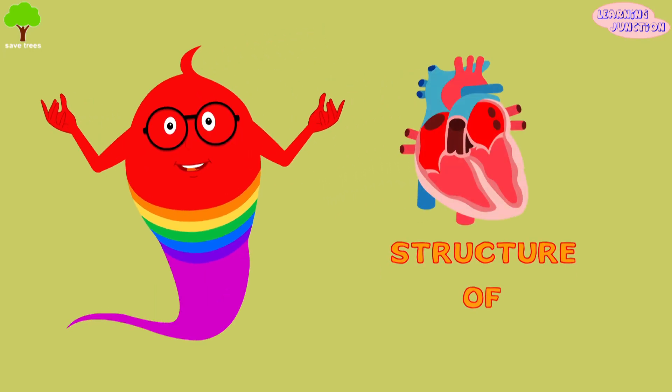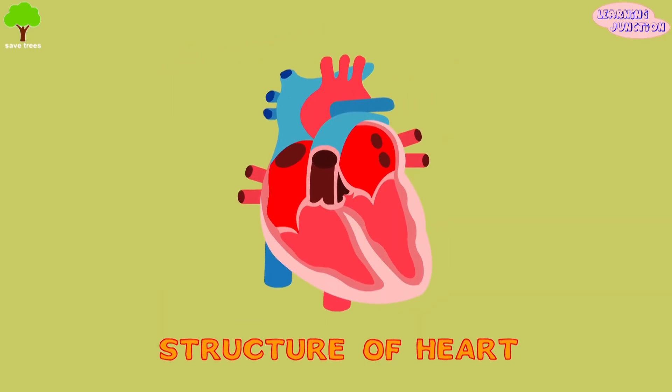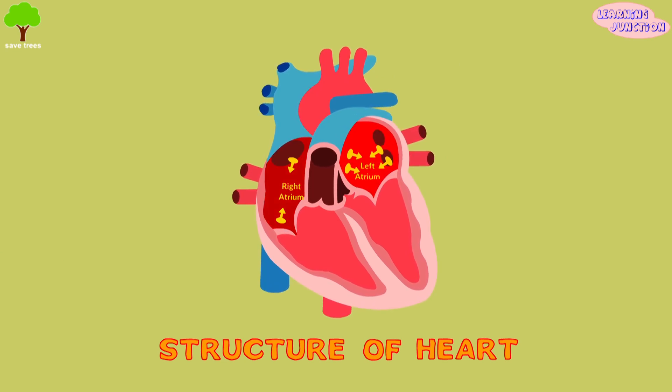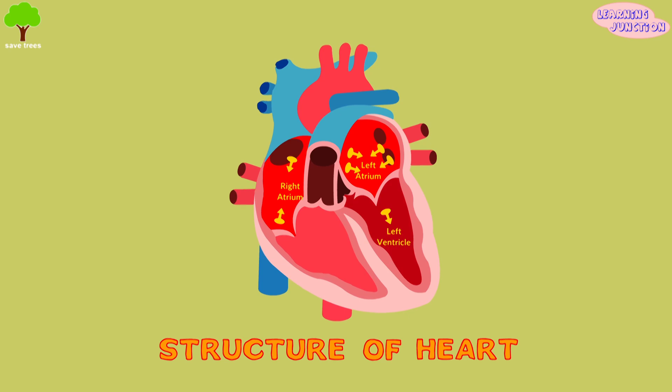Let's see the structure of the heart. Human heart has four parts: the left atrium and the right atrium at the top, and the left ventricle and the right ventricle at the bottom.